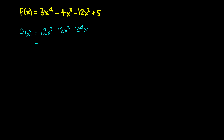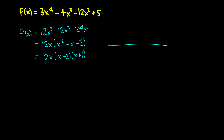To figure out our intervals, first we need to find the critical points. We factor out a common factor of 12x, leaving x² - x - 2, which factors further to (x - 2)(x + 1). So on our number line we get critical points at 0, negative 1, and 2.